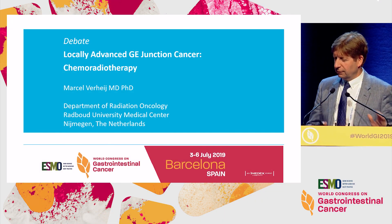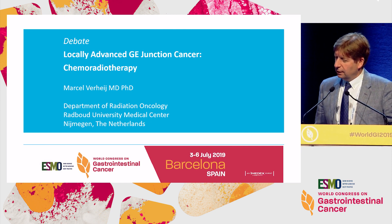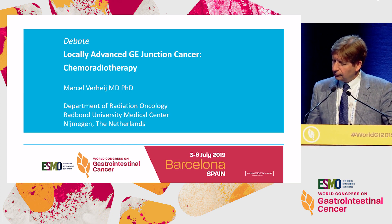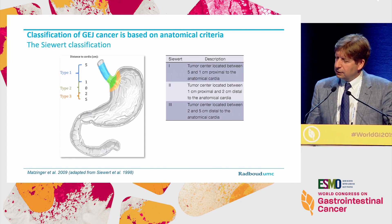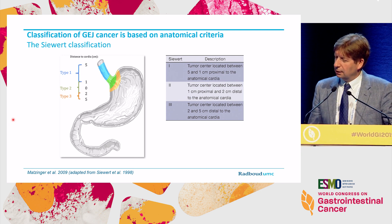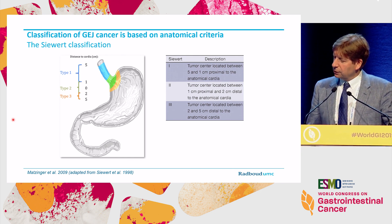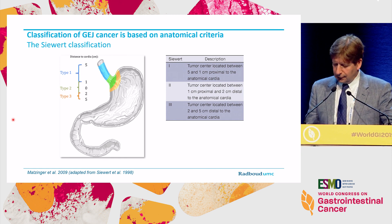First of all, I'd like to thank the organizers for giving me the opportunity to participate in this debate and focus on the role of chemoradiotherapy in locally advanced GEJ junction cancer. These are my disclosures. It's important to stress that the classification of GEJ junction adenocarcinoma is based on anatomical criteria, in particular the relation of the tumor center relative to the anatomical cardia, dividing the GEJ junction tumors into type 1, type 2, and type 3.